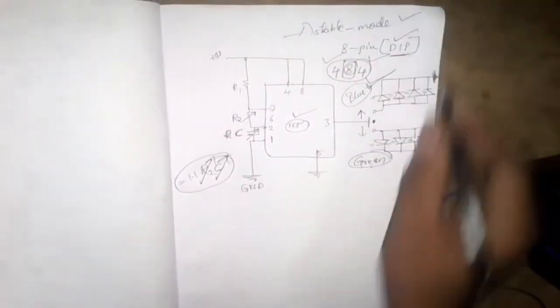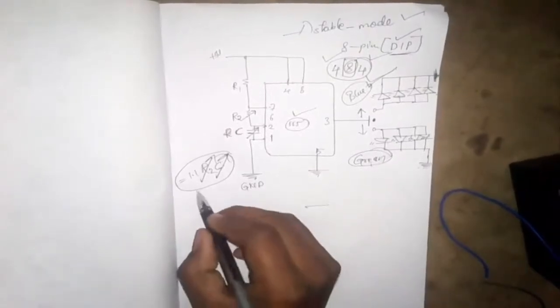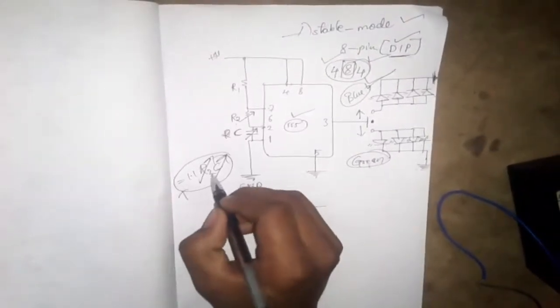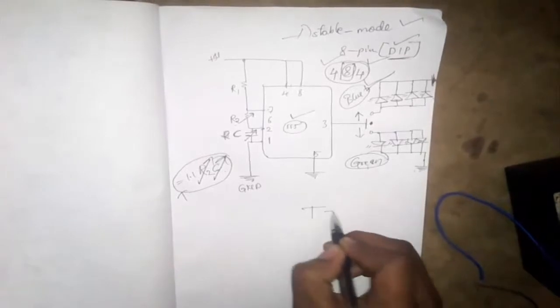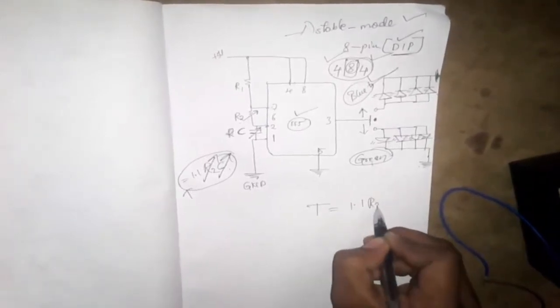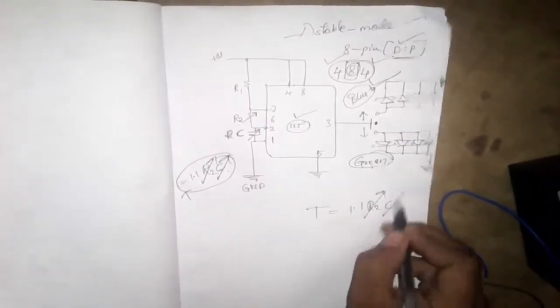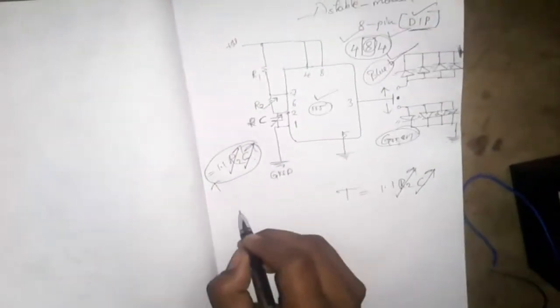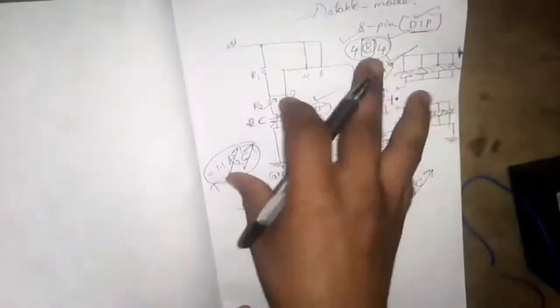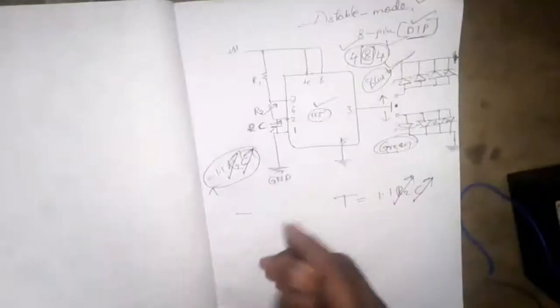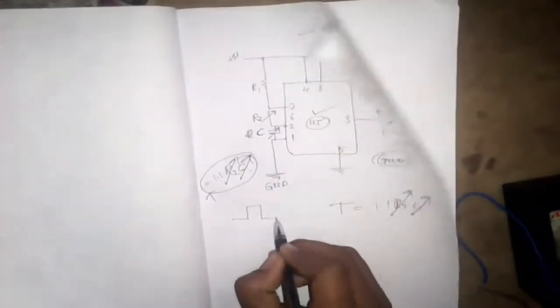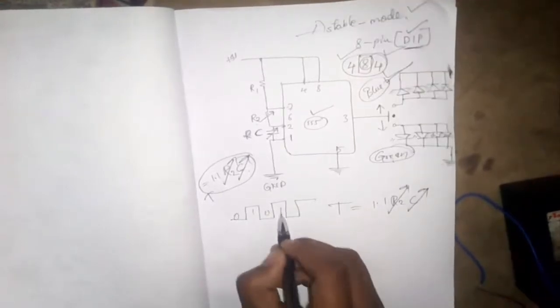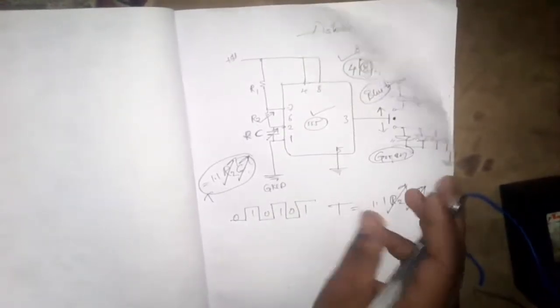Astable mode sensor according to the time period 1.1 RC. According to the 1.1 RC, the astable mode works. How it works, let us see. When I'm switching on this, when I'm giving the power supply to this, it automatically gives the pulses 0-1-0-1-0-1 continuously until the power supply is off.